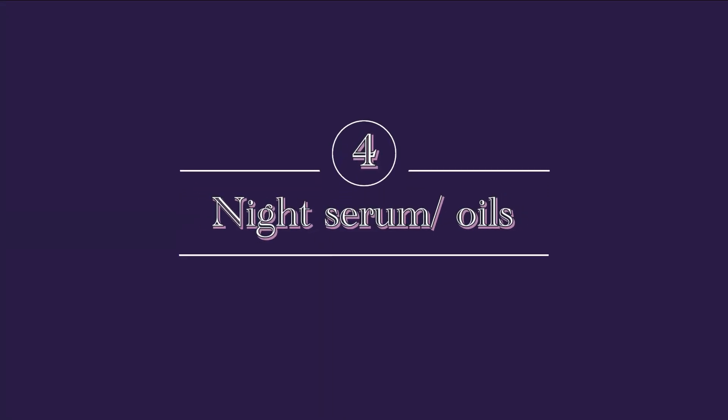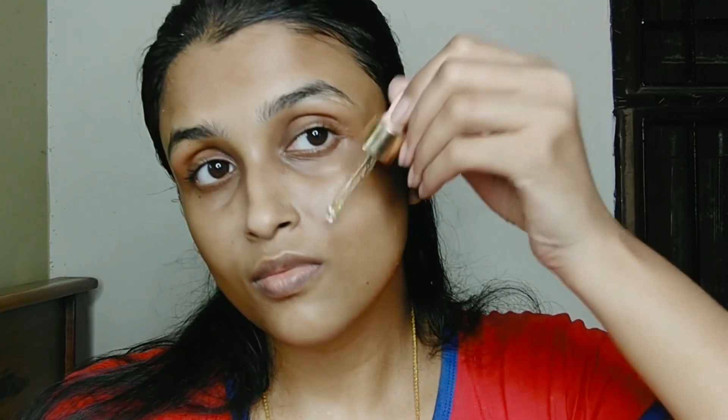The fourth step is night serum or oil. For oily skin, if you want a rejuvenating treatment, I recommend VT Cosmetics — use a gel or liquid type serum since it absorbs well. For dry skin, it's recommended to use an oil, as dry skin needs that extra nourishment overnight.